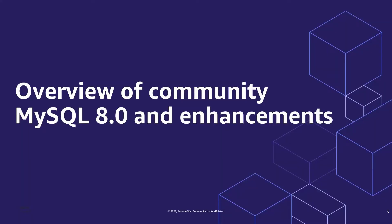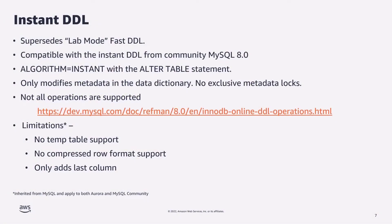Now let's dive into specific MySQL 8.0 enhancements adopted for Amazon Aurora. We'll cover the major items that are exciting customers and that customers have been asking for. The very first is the addition of Instant DDL. Customers who worked with Amazon Aurora may remember the Fast DDL feature, which was in lab mode for all of its existence. With Aurora MySQL 3, we have adopted MySQL 8.0 Community Edition's Instant DDL algorithm instead.